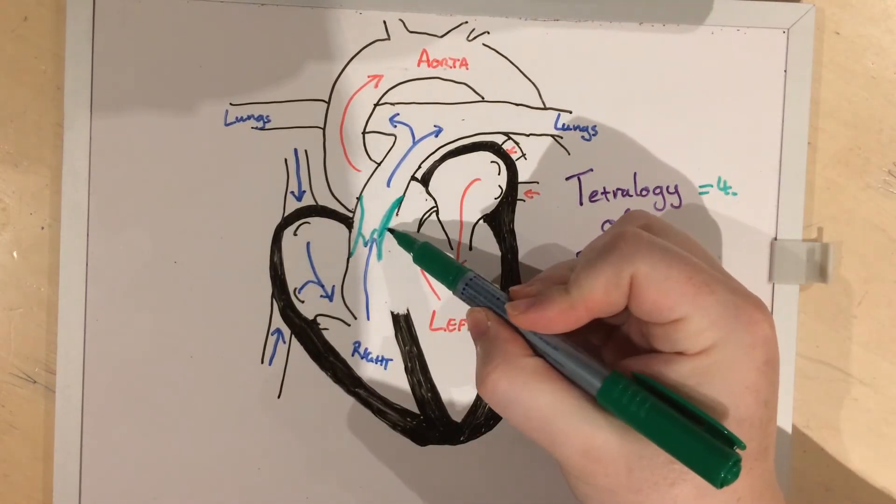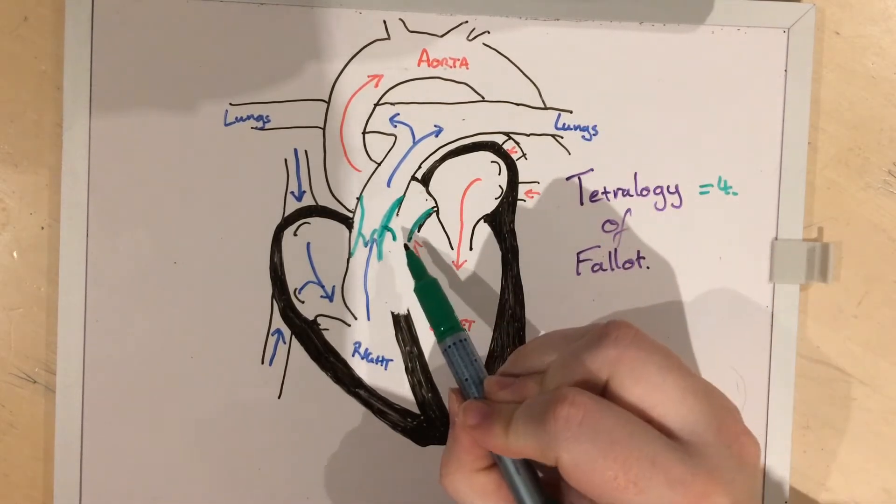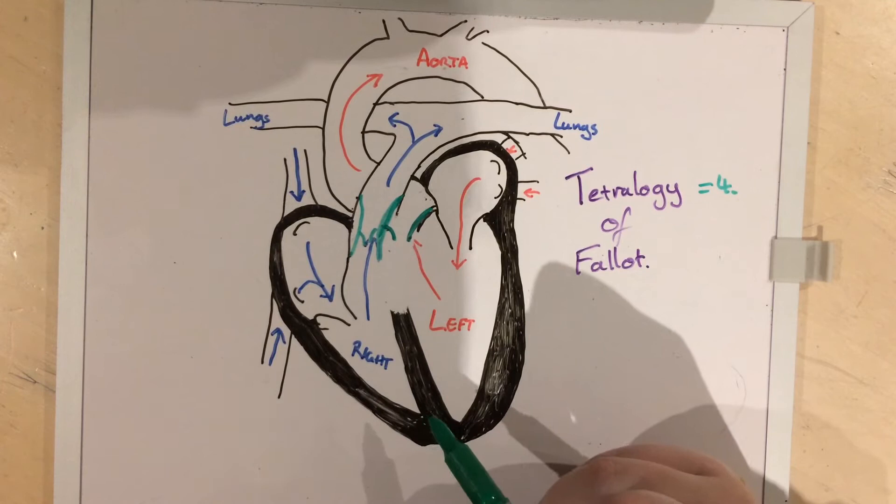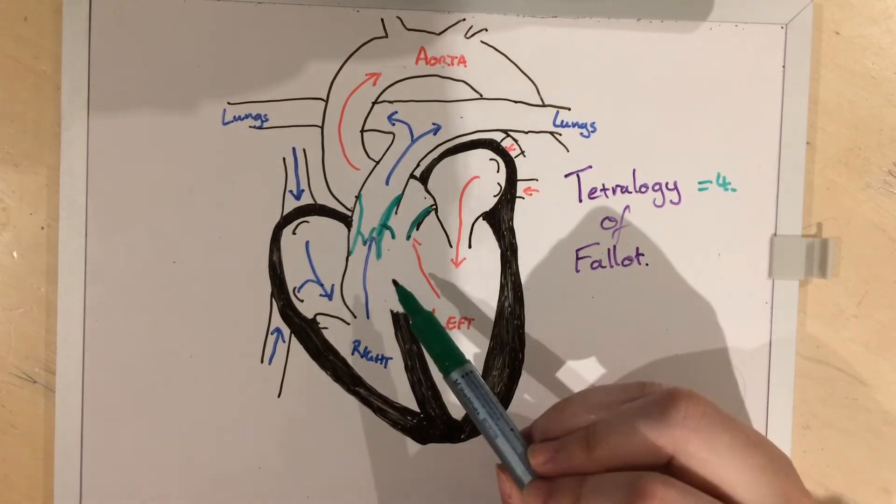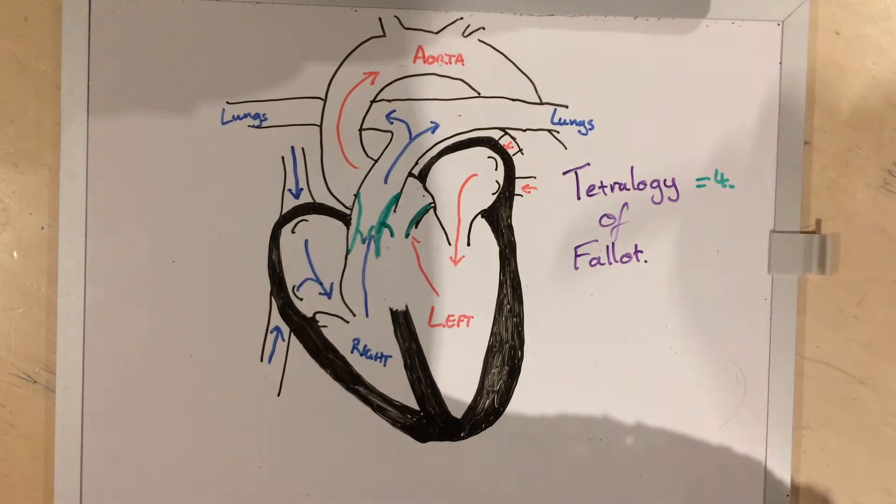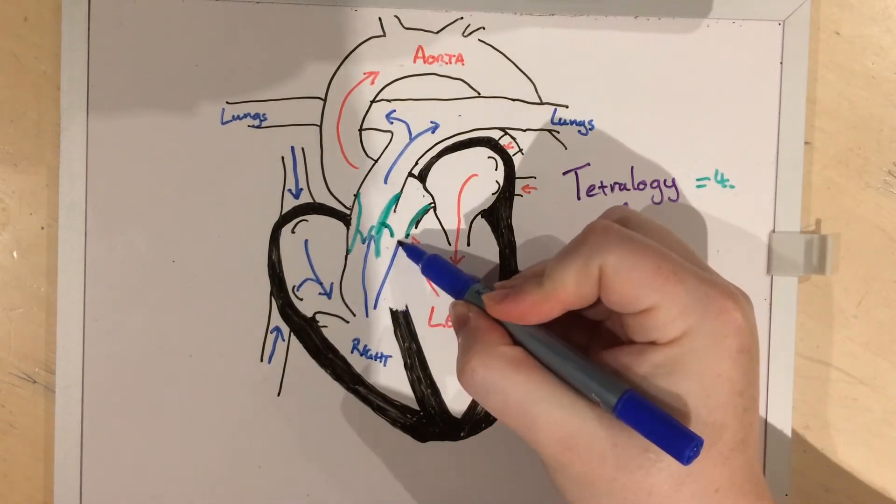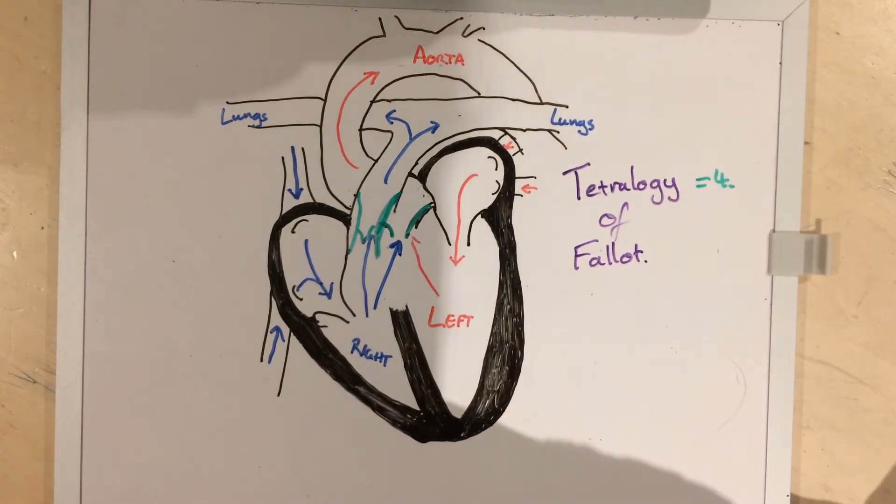Secondly, because the pulmonary artery is small, the aorta is often pushed into the right side of the heart, overriding it. So the aorta now has access to both oxygenated blood from the lungs as it should, but also deoxygenated blood from the body, which it really shouldn't.